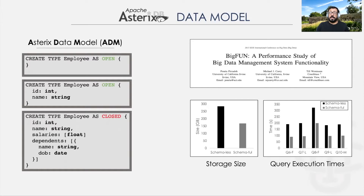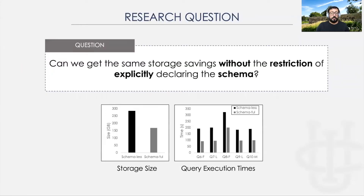In 2015, a study showed that by declaring the schema, the storage size was reduced by 50%, and the query execution time reduced by the same factor. So, can we get the same storage savings without the restrictions of explicitly declaring the schema?